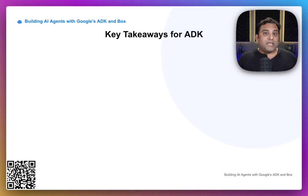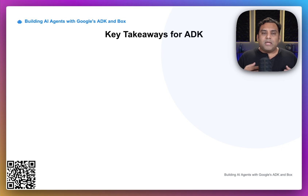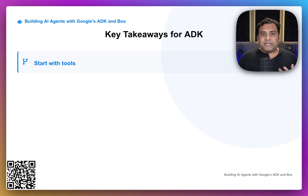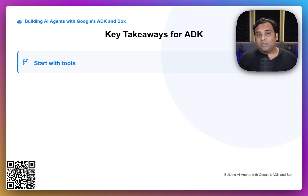As you've seen through the Box agent example, building with ADK follows a very clear and powerful pattern. Let's summarize the key takeaways for that development process. First, you start with tools — these are your foundational building blocks. You create focused, single-purpose functions that wrap external APIs, like connecting to Box, reading a file, or calling Box AI. This is how your agent interacts with the outside world.